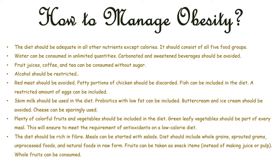So now let's learn how to manage obesity. The diet should be adequate in all nutrients except calories and should consist of all five food groups. Water can be consumed in unlimited quantities, while carbonated and sweetened beverages should be avoided. Fruit juices, coffee, and tea can be consumed without sugar, and alcohol should be restricted. Red meat should be avoided, fatty portions of chicken should be discarded, and fish can be included in the diet. A restricted amount of eggs can also be included, and skimmed milk should be used. Probiotics with low fat can be included.